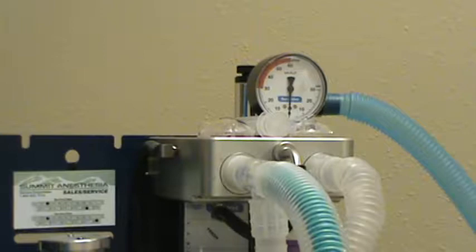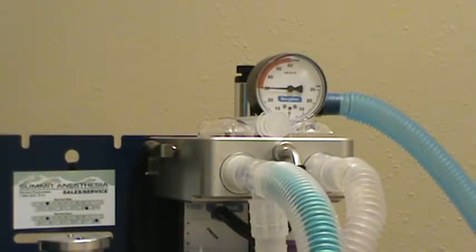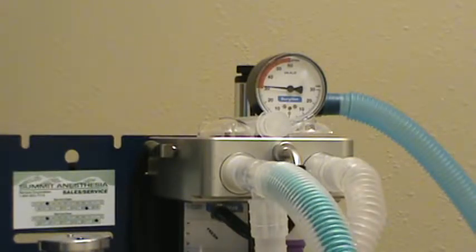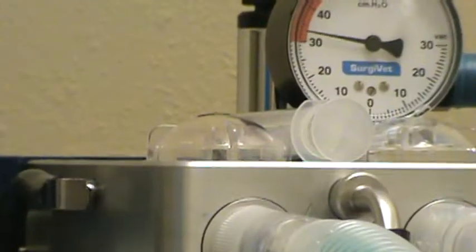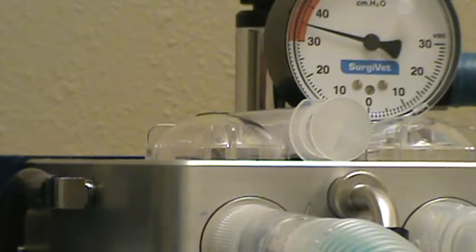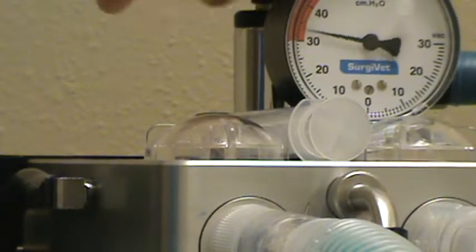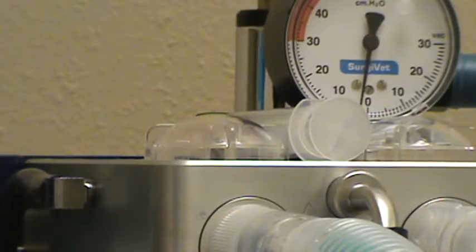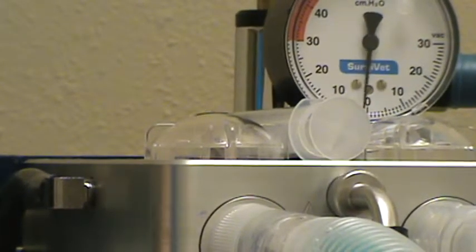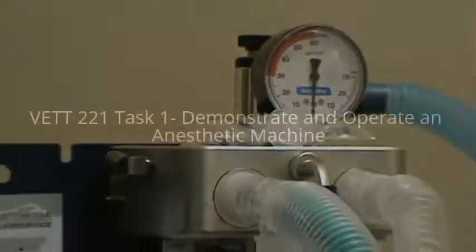We're zoomed in there and it looks like it's holding at 30. If anything, it's going up. That's good. You don't want to see that falling. Now we're going to release the pressure pop-off valve and that worked correctly. We're going to get rid of that oxygen into the scavenging system.